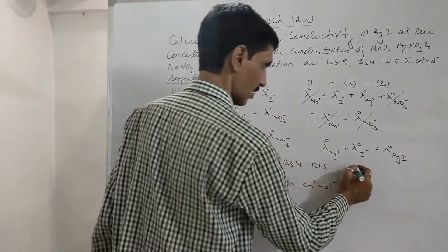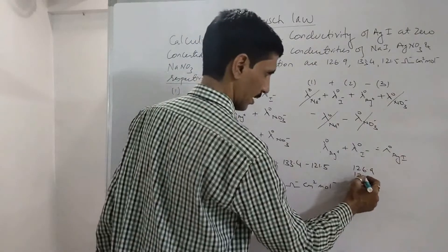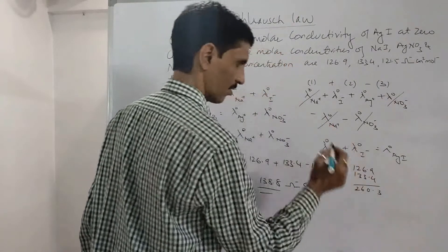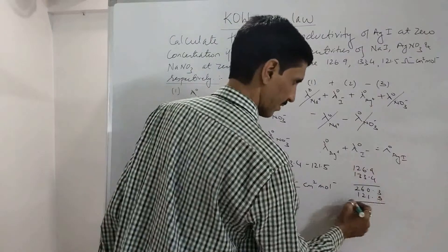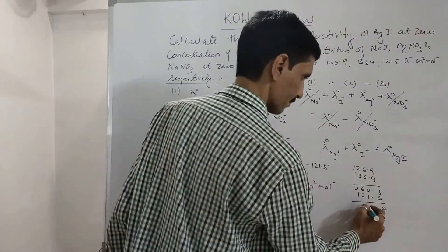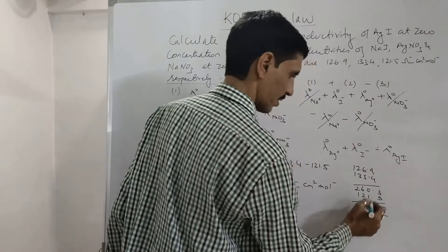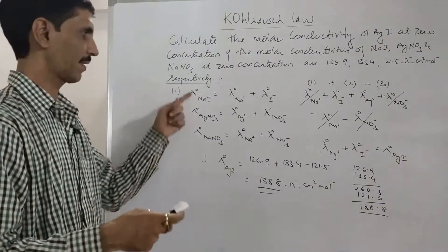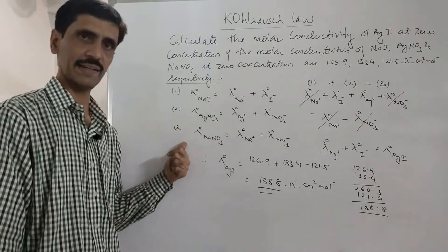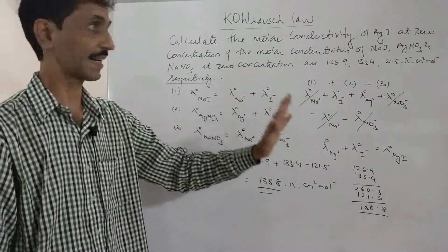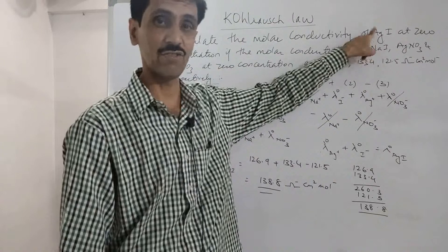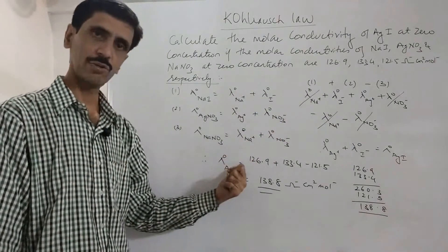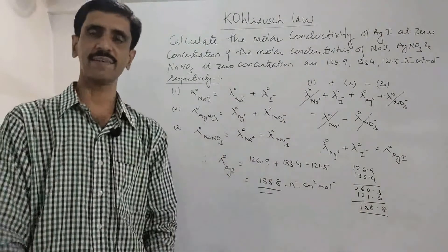So the final answer is 138.8 ohm⁻¹ cm² mol⁻¹. What we have done is added two equations and subtracted the third. First we verified that the operation yields λ⁰(Ag⁺) + λ⁰(I⁻), which is indeed AgI, and then applied the same mathematical operation to the numerical values to get the final answer.